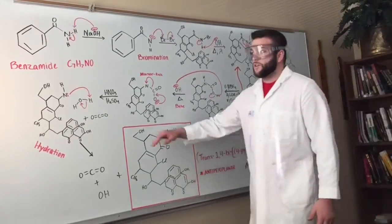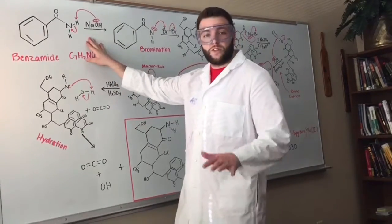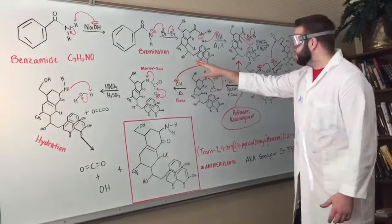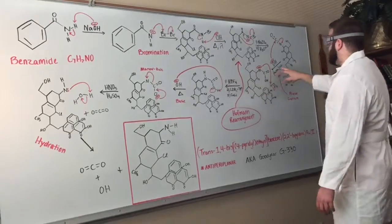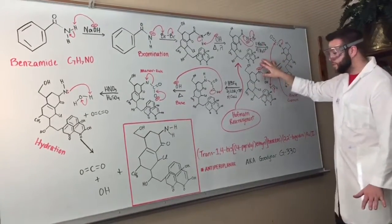It starts with your basic benzamide treated with a strong base which deprotonates the nitrogen. Then it goes through bromination and another strong base with light and heat. After this step, it goes to a completely different step.